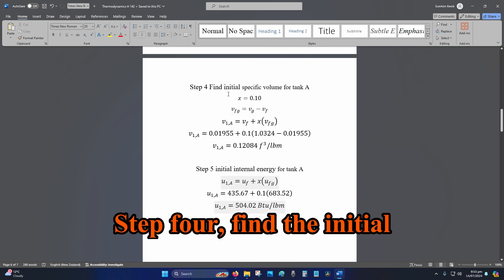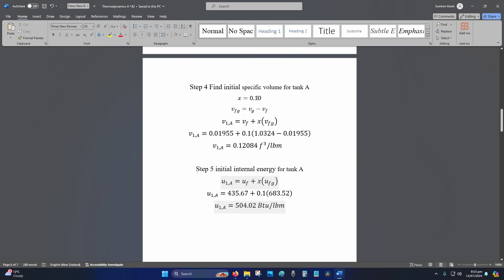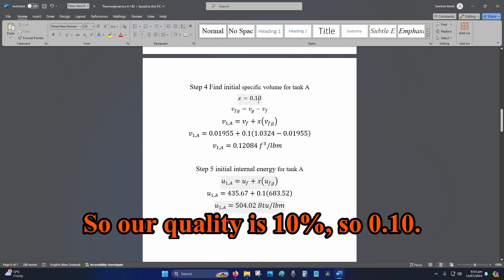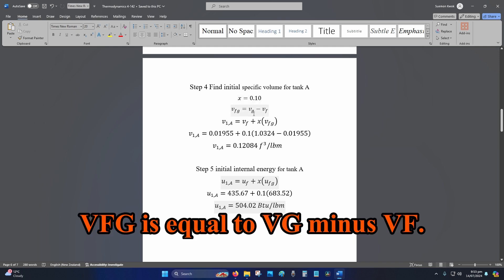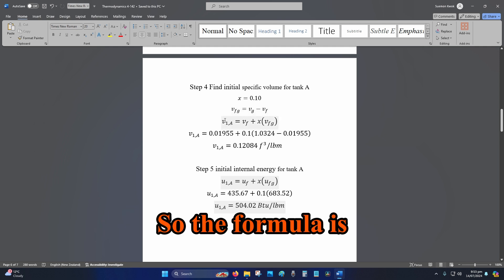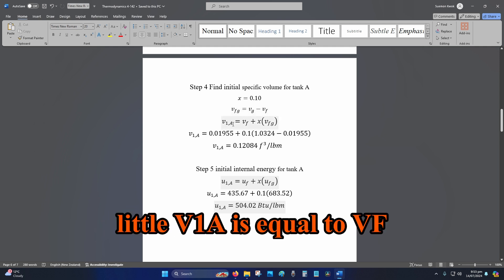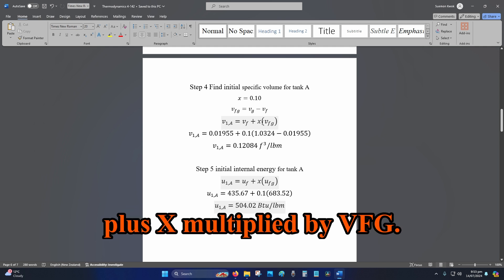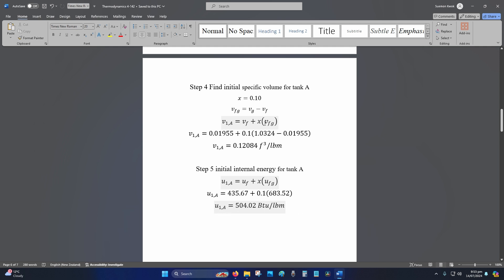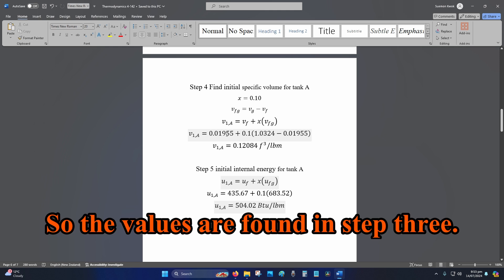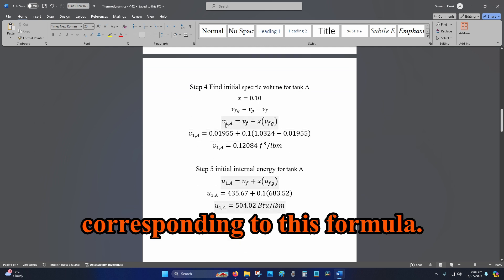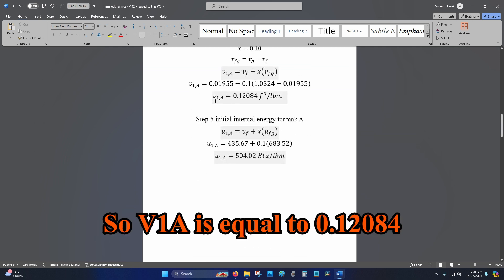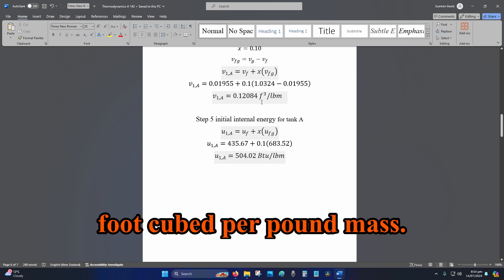Step 4, find the initial specific volume for tank A. So, our quality is 10%, so 0.10. VFG is equal to VG minus VF. So, the formula is little V1A is equal to VF plus X multiplied by VFG. So, the values are found in step 3, so we plug these values in, corresponding to this formula. So, V1A is equal to 0.12084 foot cubed per pound mass.